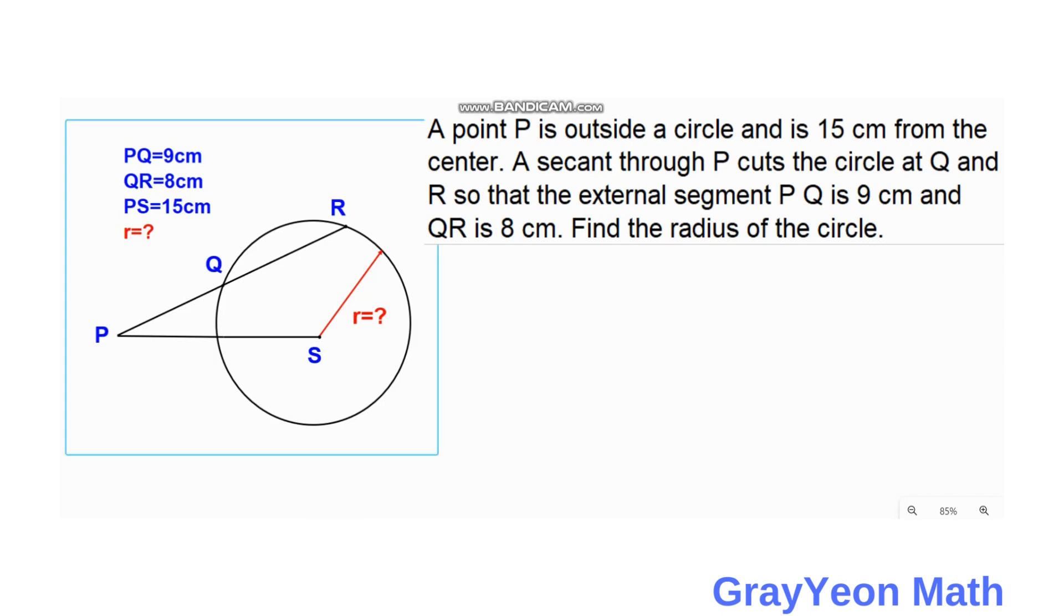A point P is outside a circle and is 15 cm from the center. A secant through P cuts the circle at Q and R so that the external segment PQ is 9 cm and QR is 8 centimeters. Find the radius of the circle.